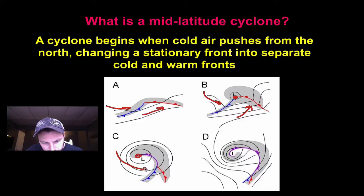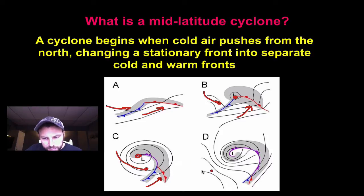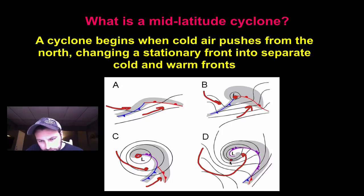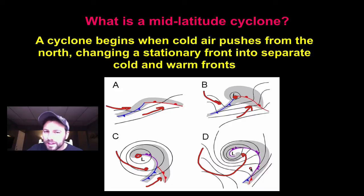We can see here cold air, warm air or warm front, and then associated with the occluded front right here. So that's our occluded front. Over time it keeps moving, and you can see it's still moving counterclockwise. Basically that cold air has now caught up to that warm air, forced it up, and it's trapped. We now have this large occluded front.